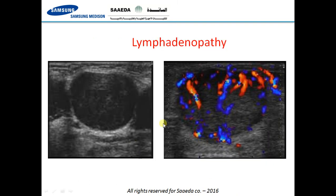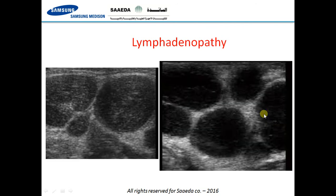This is an example of a malignant lymph node with no fatty hilum and markedly heterogeneous peripheral vascularity — an appearance typically seen in lymphoma.